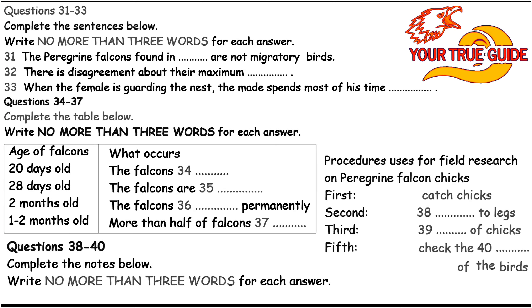Peregrine falcons can build dangerous quantities of pesticides in their bloodstream by feeding on smaller mammals, which in turn feed on crops grown on farms where pesticides are used. Finally, we check the birds thoroughly for their general health. This whole process only takes a few minutes. In fact, most of our time in the field is actually spent trying to find the nests, not on the data collection itself. Well, that's all I have for you today. If you'd like to do some further reading...